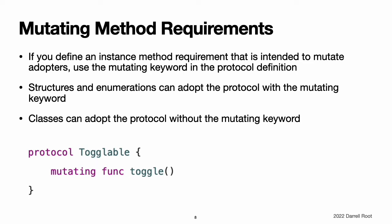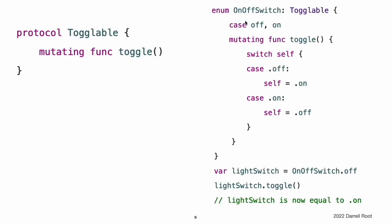This example defines a protocol called toggleable which defines a single instance method requirement called toggle. The toggle method is intended to toggle or invert the state of any conforming type, typically by modifying a property of that type. The toggle method is marked with the mutating keyword as part of the toggleable protocol definition to indicate that the method is expected to mutate the state of a conforming instance when it is called. This example defines an enumeration called on-off switch. This enumeration toggles between two states indicated by the enumeration cases on and off. The enumeration's toggle implementation is marked as mutating to match the toggleable protocol's requirements.